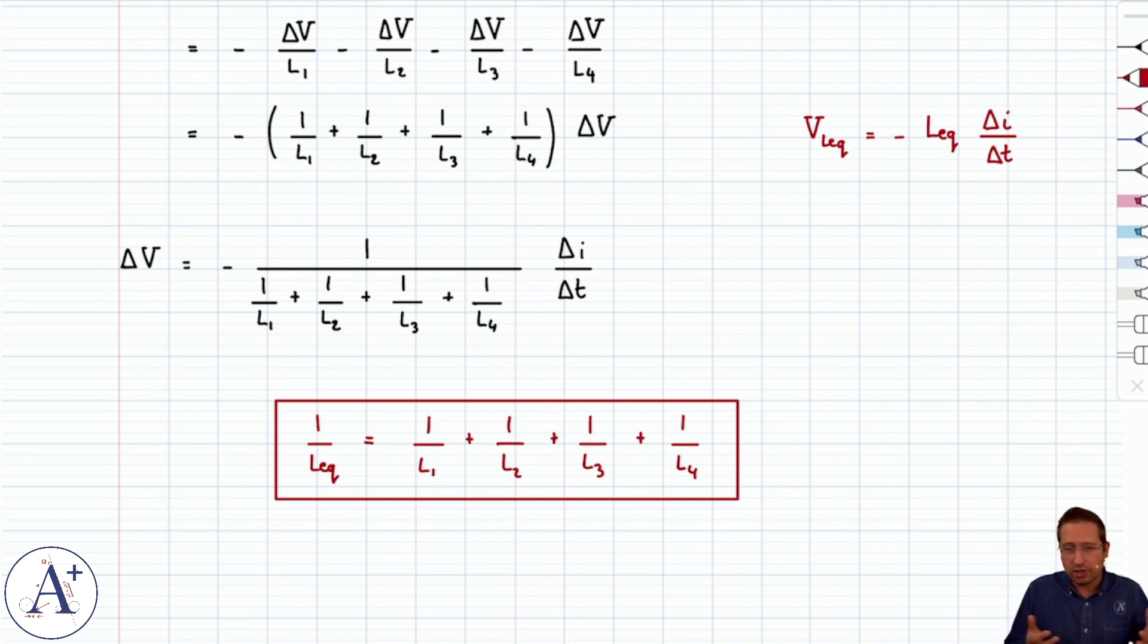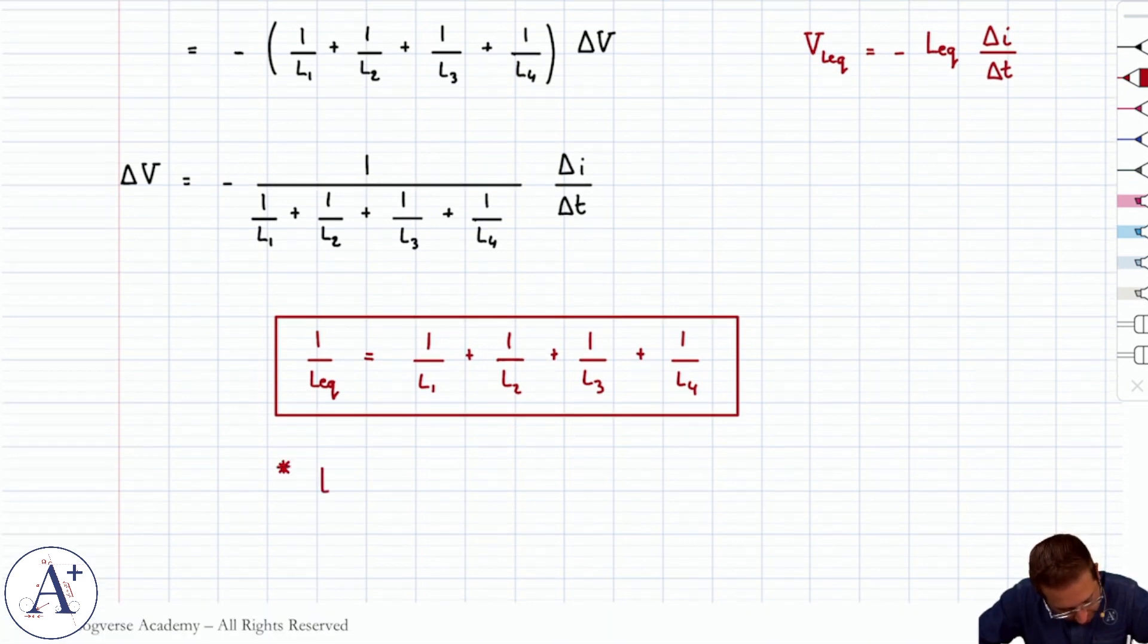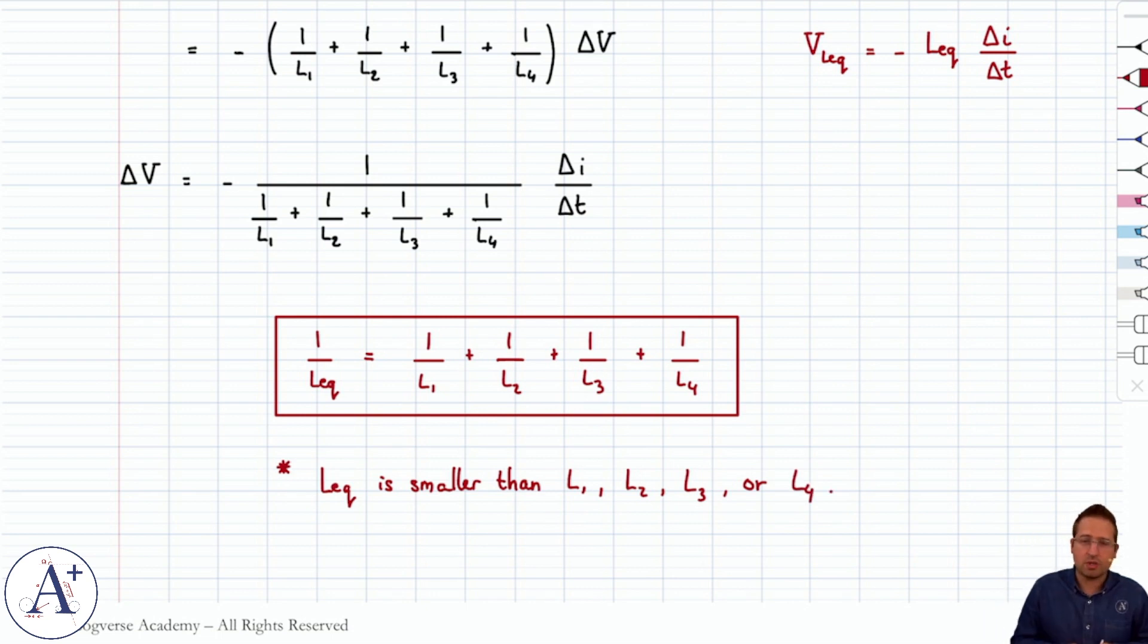But note that whatever value comes out for L equivalent is going to be smaller than L1, L2, L3, or L4. That's just how the math plays out. Let's make a note of that: L equivalent is smaller every time than L1, L2, L3, or L4. So you get an equivalent inductor that has an equivalent inductance that is smaller than any one value of the initial arrangement of four inductors in parallel.